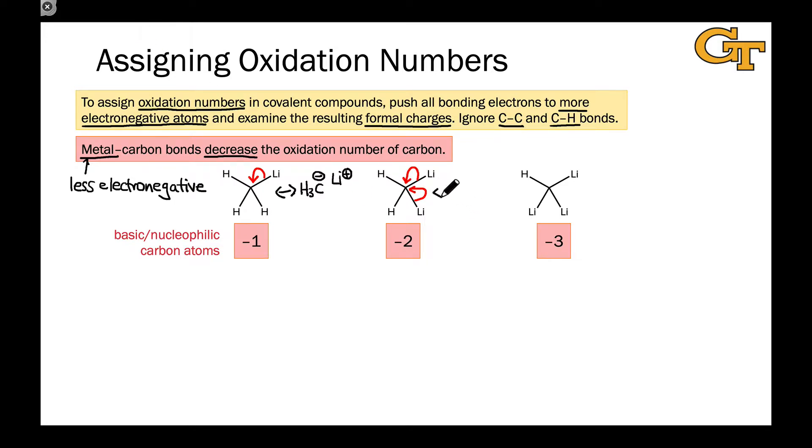and the resulting resonance structure, as obnoxious as it may seem, contains a negative two charge on the carbon atom and plus one charges on each of the lithium atoms. That negative two charge on the carbon points to an oxidation number of carbon of negative two.